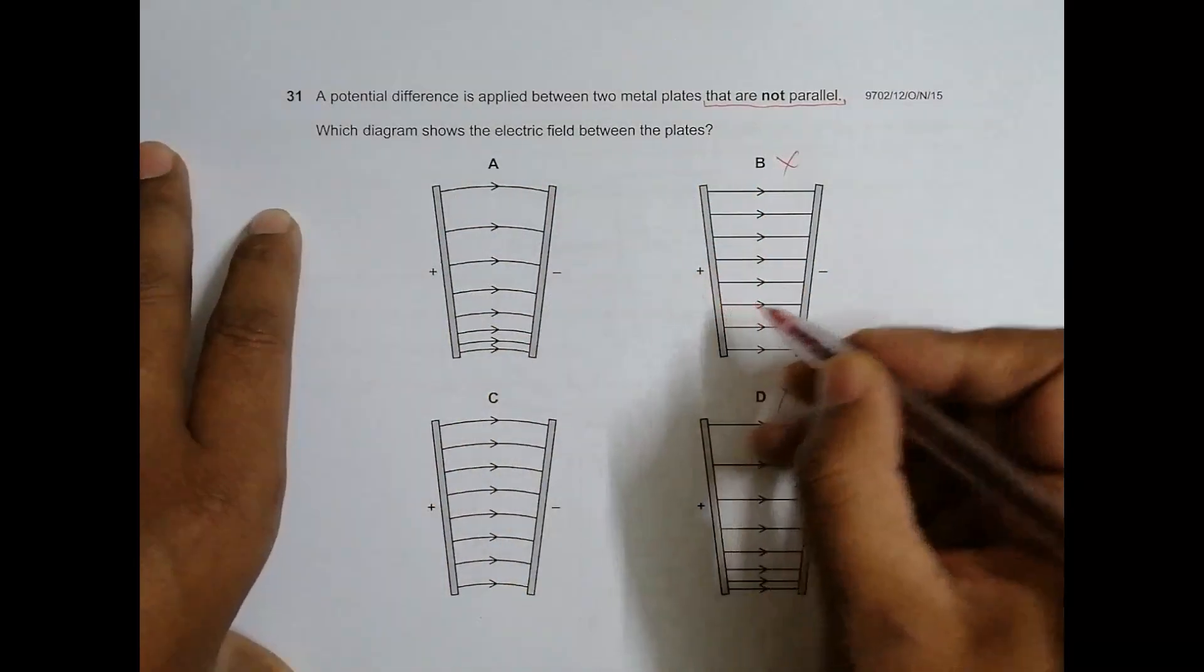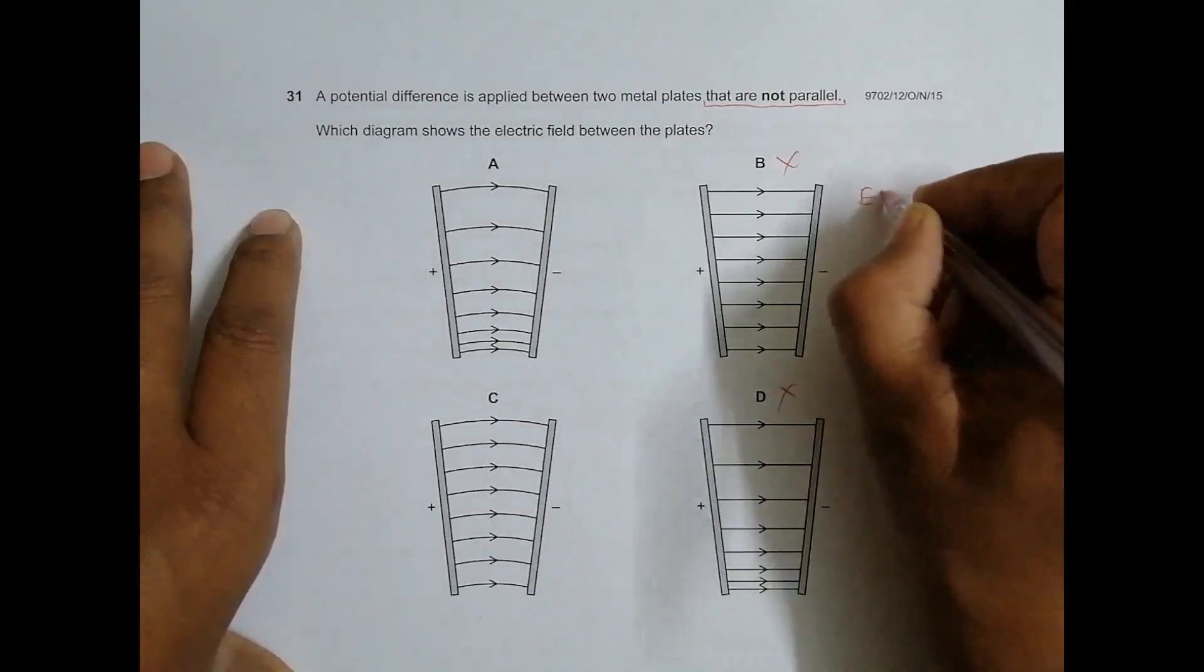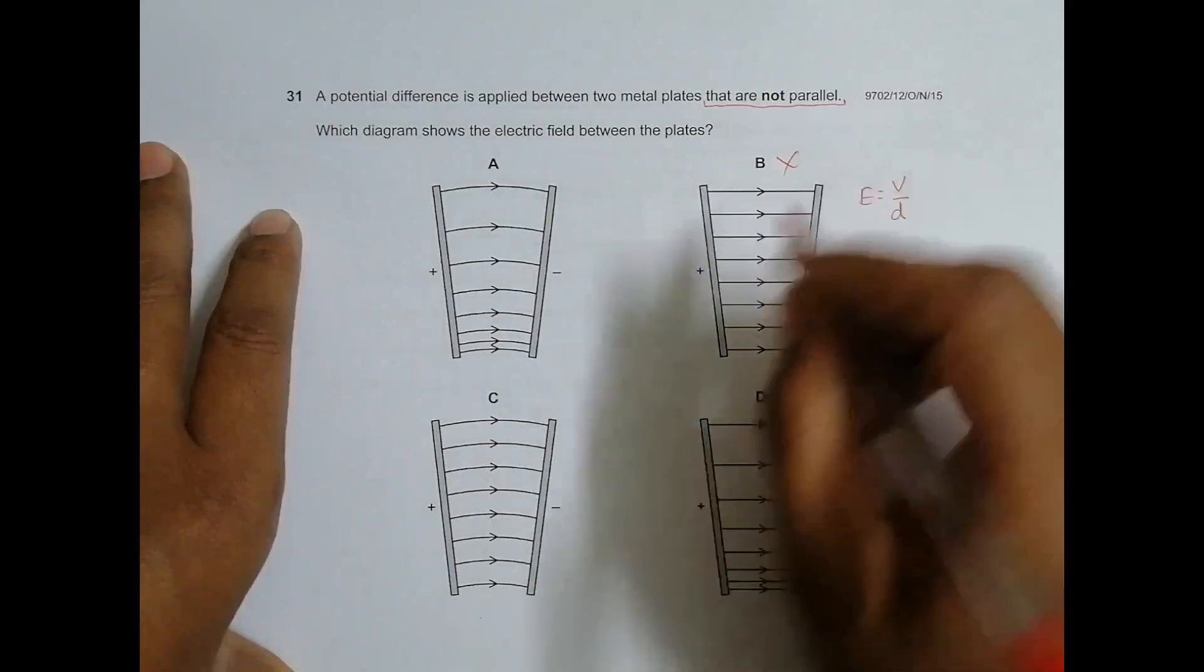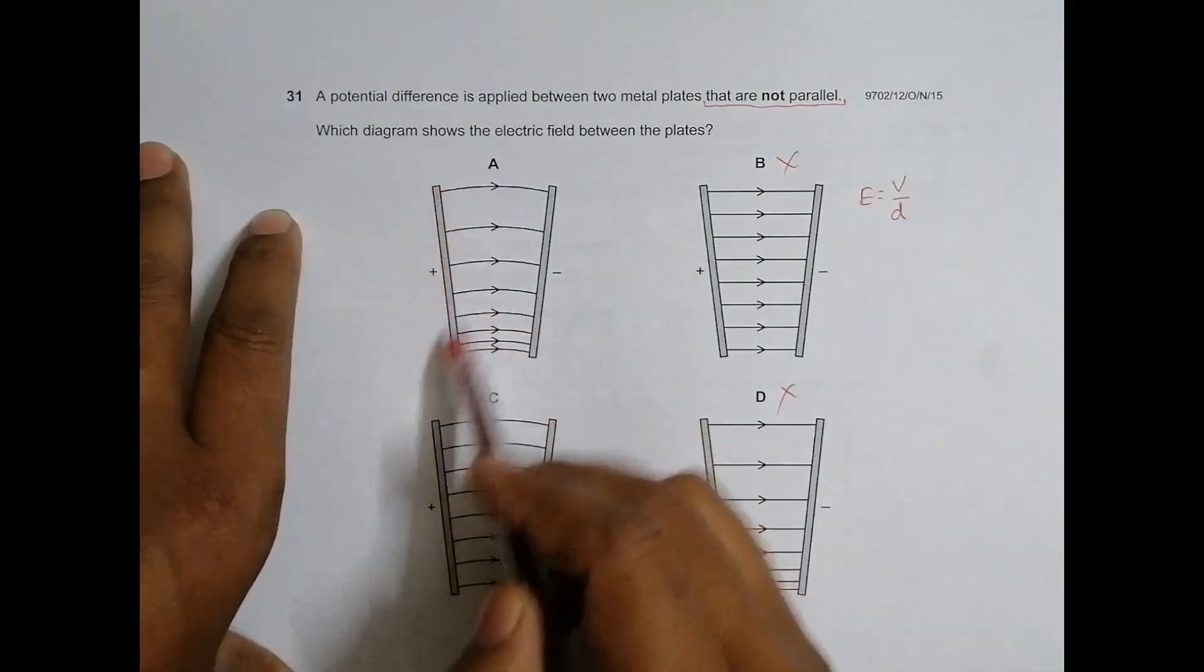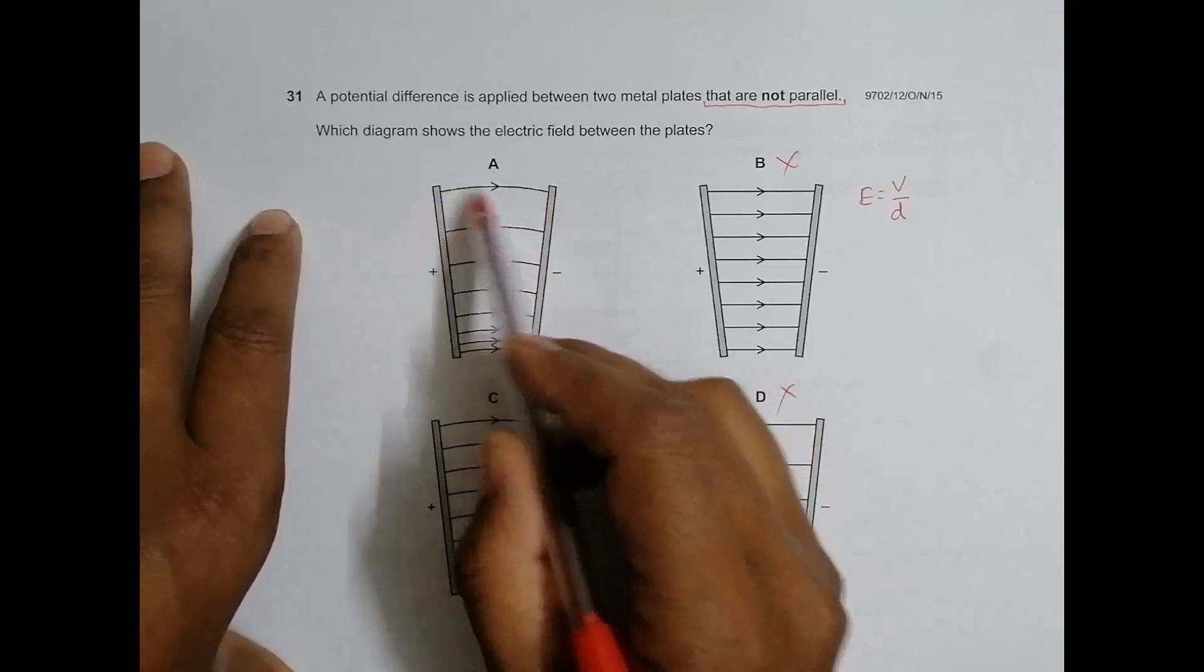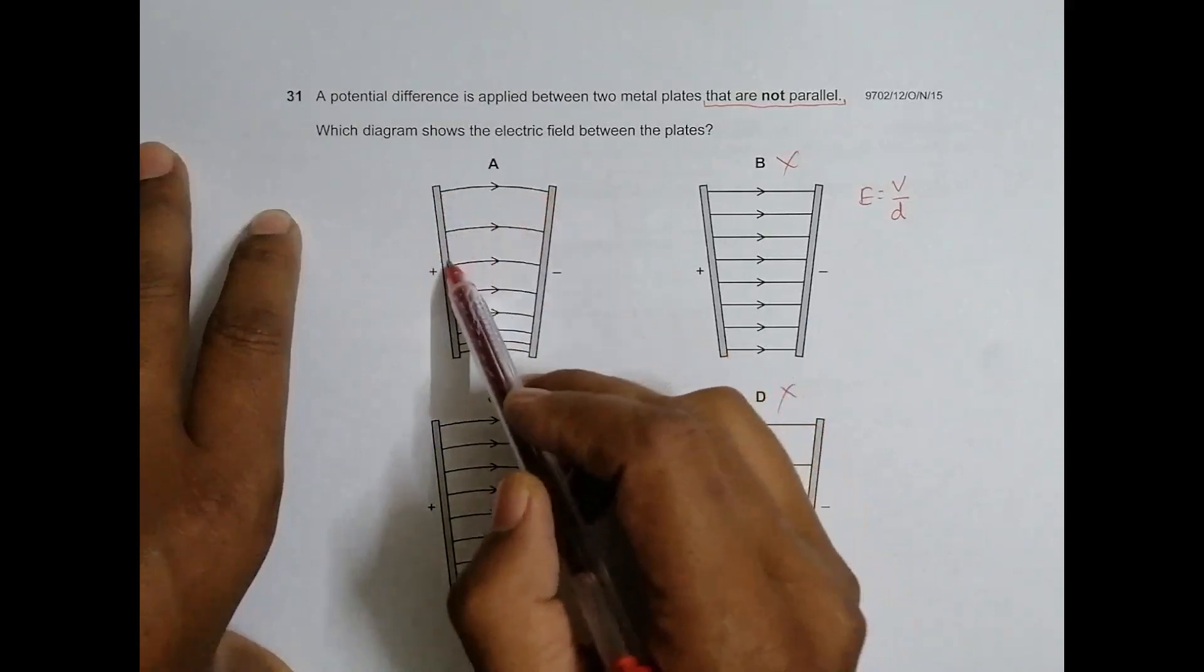But one thing we have to take care of is the electric field strength: E equals V by D. Since they are connected to the same source, V is same here and V is same here. So that means the potential difference across any two points is the same everywhere.